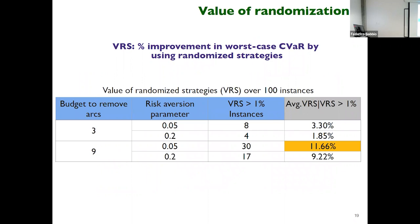Now let's look at the value of randomization in this network interdiction problem. Value of randomization is the percentage improvement in worst-case CVaR obtained by using a randomized strategy rather than a deterministic one. Over 100 instances, for those where the value of randomization exceeds 1%, the average can be as high as 11.66%. However, for most instances the value of randomization is less than or equal to 1%. So we don't see many instances with significant value in randomizing — it remains an open question which combinatorial optimization problems yield more value from randomization compared to network interdiction.